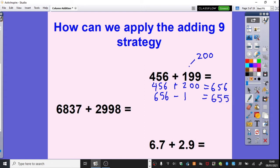On to this one then, a little bit trickier. This 2,998 is 2 away from 3,000. So we can do 6,837 add 3,000 equals 9,837. However,